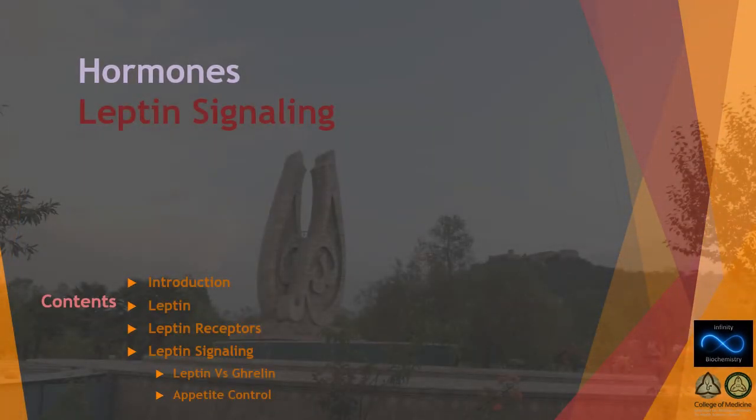Hi, welcome back to the series of biosignaling lectures. This is the ninth and last lecture of the series. In this lecture we'll be discussing leptin signaling, leptin as a hormone and how it mediates its action through its receptors present in the hypothalamus, and finally its role versus ghrelin and how they regulate appetite in humans.